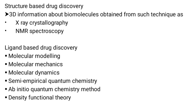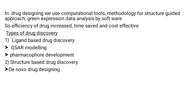There are two methods to find a suitable drug in rational drug discovery. The first is structure-based drug discovery, which uses 3D information about biomolecules obtained from techniques such as X-ray crystallography and NMR spectroscopy. The second is ligand-based drug discovery, which includes QSAR modeling and pharmacophore development. In drug designing, computational tools and methodology for structure-guided approaches are used, along with gene expression data analysis by software, increasing efficiency, saving time, and reducing cost.